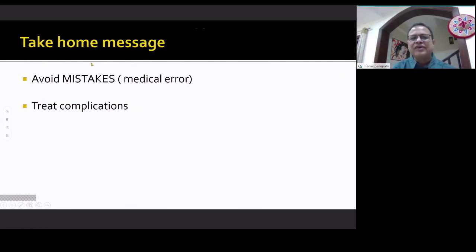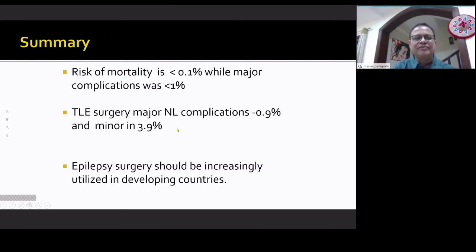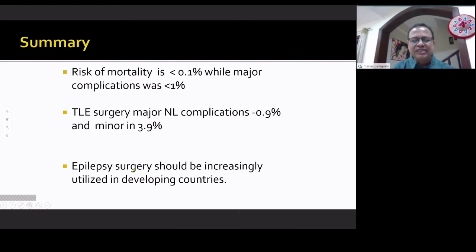The take-home message is: avoid mistakes — that's the medical error — so that we can reduce complications and treat them, so that the morbidity can be reduced significantly. In summary, the risk of mortality is 0.1%, while the risk of major or permanent complication is less than 1%. In our series, the major complication rate was 0.9% and minor complication rate was 3.9%. Epilepsy surgeries should be done increasingly, as it is very safe and the outcome is very good.